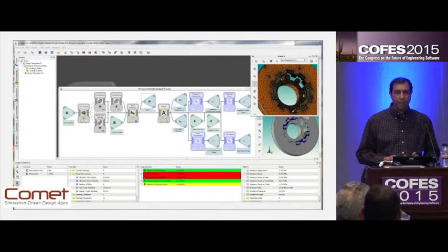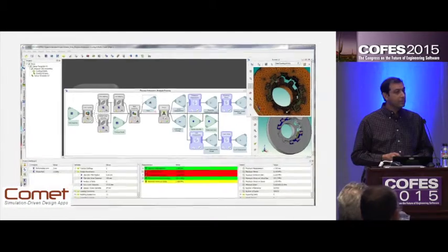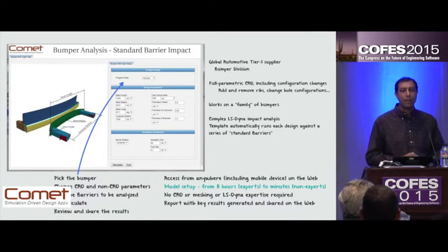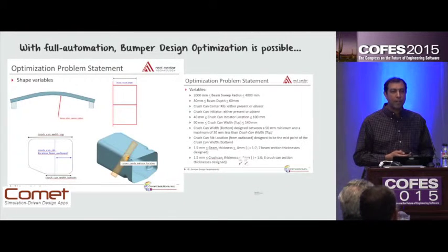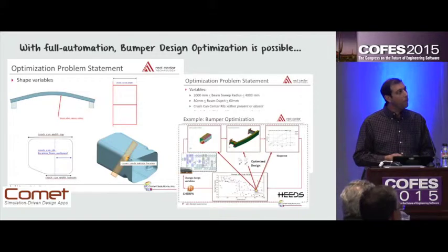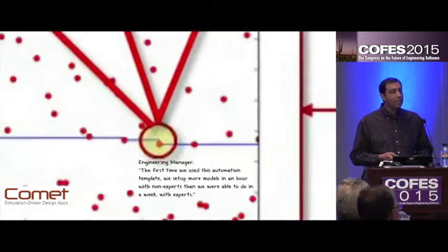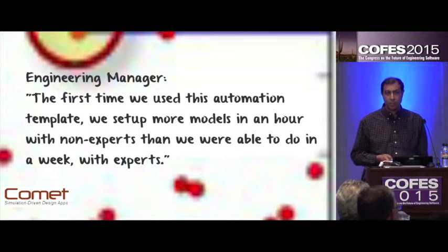But what's the secret sauce behind these? It's the templates. With this environment, you're graphically building these templates rapidly. The current method of building templates is scripting — that can take months. This can be done within a few days. Here's an example that goes back to something Mark said: we really need to rapidly do optimization. With this kind of automation for bumper calculations, the manufacturer can now do fully automated optimizations, changing the design in any shape or form, creating optimized designs that reduce mass automatically. As the manager said: the first time we used this automation template, we set up more models in an hour with non-experts than we were able to do in a week with our experts.